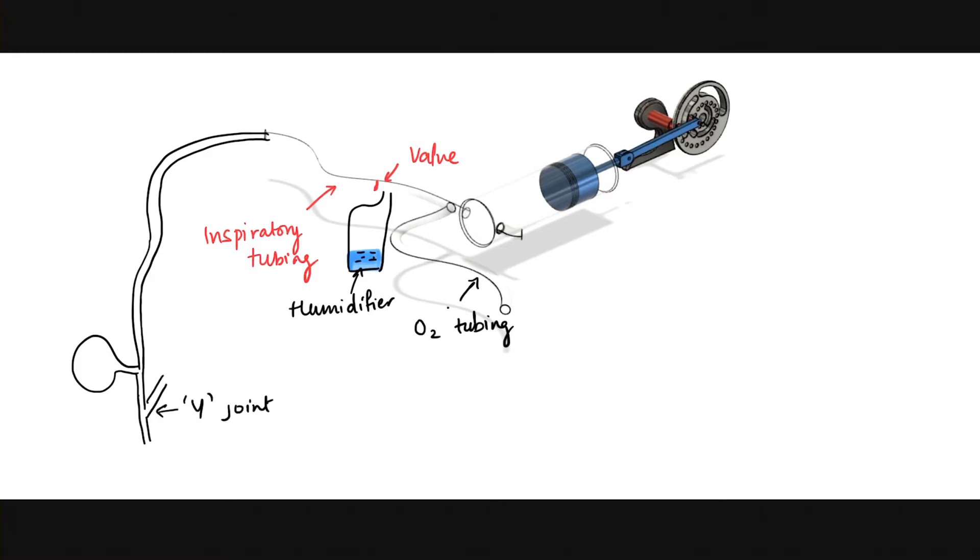We also see the humidifier here. It is required as we are bypassing the paranasal sinuses of the patient with the endotracheal tube. The balloon-like thing you see is a collapsible balloon which will protect the patient from unwarranted pressure and volume by acting as a temporary receiver.